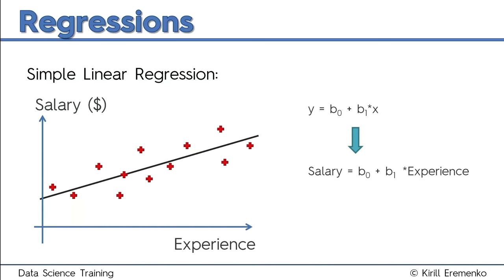What regression essentially means is putting a line through your chart that best fits the data. We'll talk about best fitting in the next tutorial when we discuss ordinary least squares. The line that best fits this data is the one we're looking at. Now, what does the constant b0 mean? It's the point where the line crosses the vertical axis — let's say $30,000. When experience is zero, the b1 times experience term becomes zero, so salary equals b0. That means a person fresh from university joining this company will most likely have a salary of about $30,000.